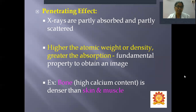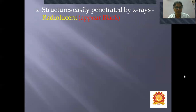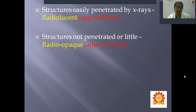For example, bone has high calcium content, so it is denser than skin and muscle. Bone will appear more white, or radio-opaque, than skin and muscles, which are radiolucent. Structures easily penetrated by X-rays appear radiolucent — that is, they appear black. Whereas structures not penetrated, or penetrated very little by X-rays, appear radio-opaque, which appears as white.